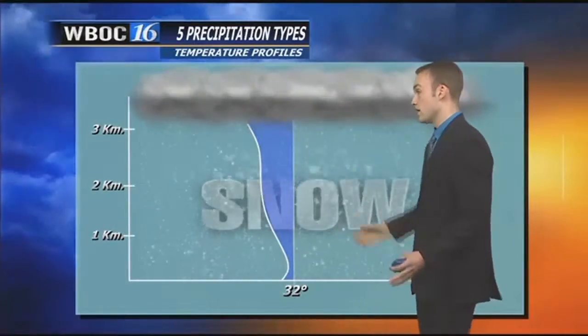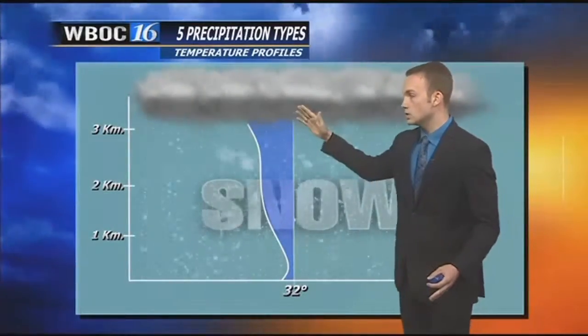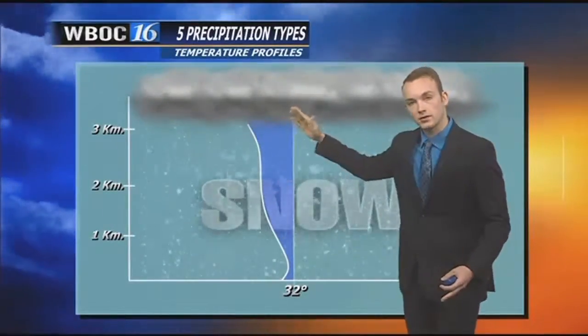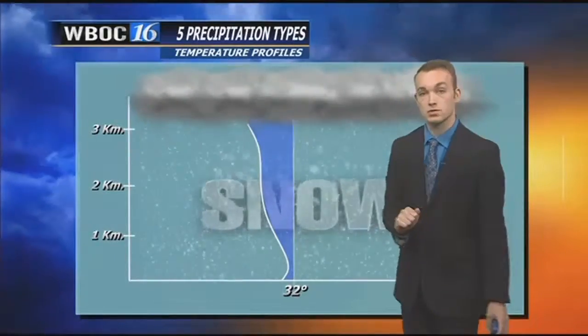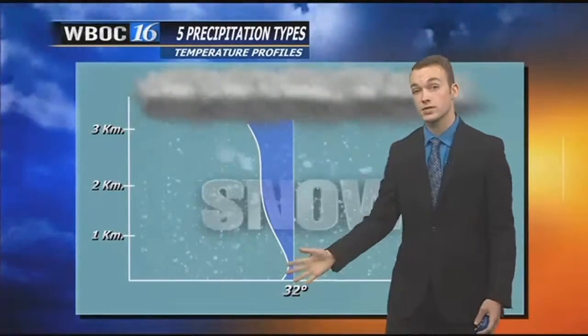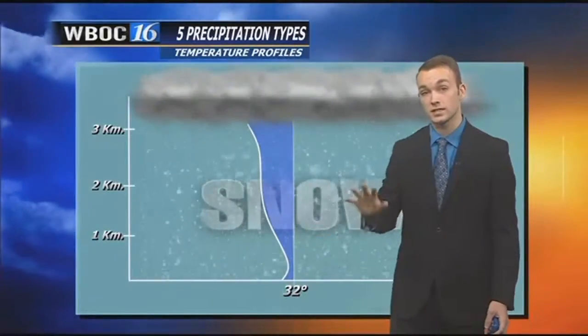Snow is the opposite of that. You're going to see cold temperatures from the cloud layer all the way down to the surface. So temperatures stay below freezing, resulting in those snowflakes falling.